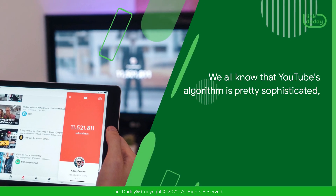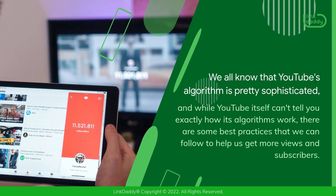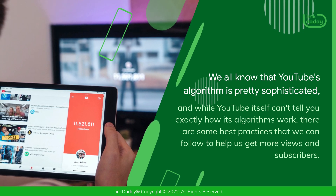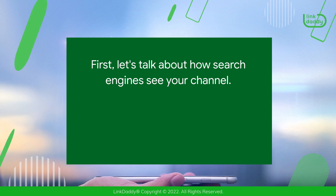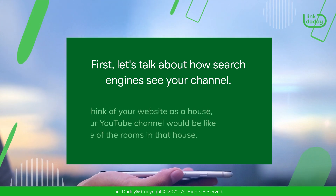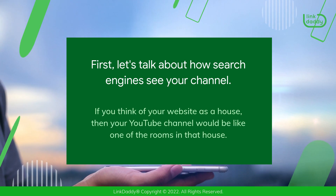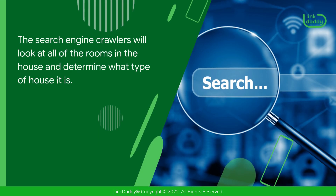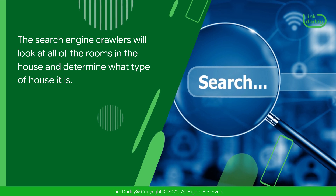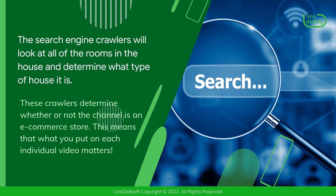We all know that YouTube's algorithm is pretty sophisticated, and while YouTube itself can't tell you exactly how its algorithms work, there are some best practices we can follow to help us get more views and subscribers. If you think of your website as a house, then your YouTube channel would be like one of the rooms in that house. The search engine crawlers will look at all of the rooms in the house and determine what type of house it is, including whether or not the channel is an e-commerce store.